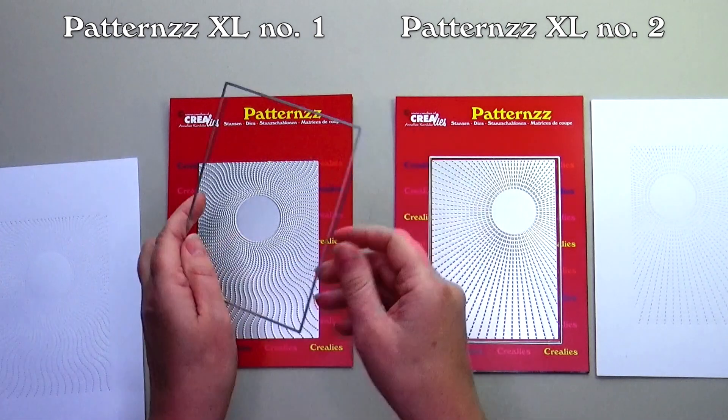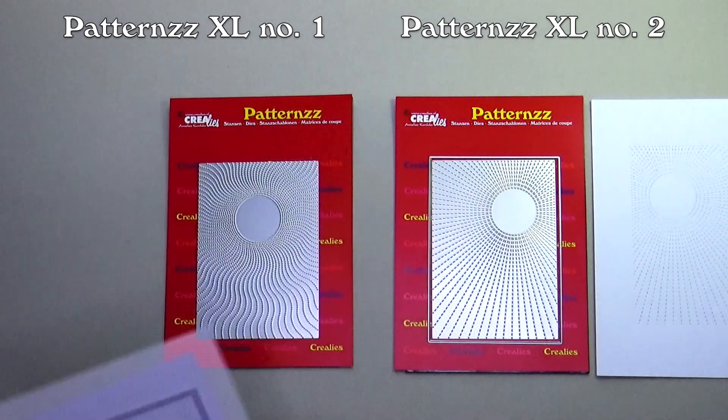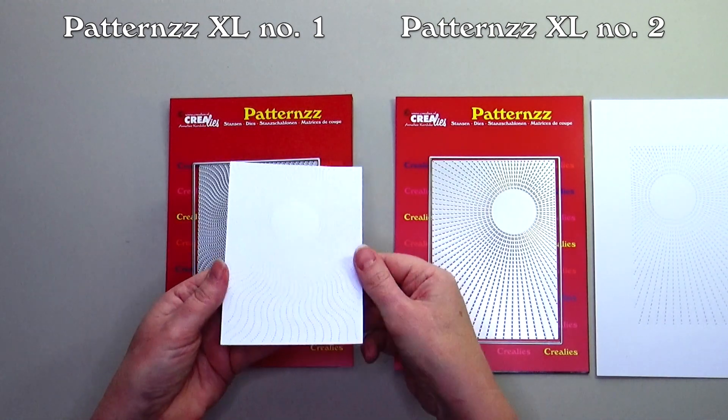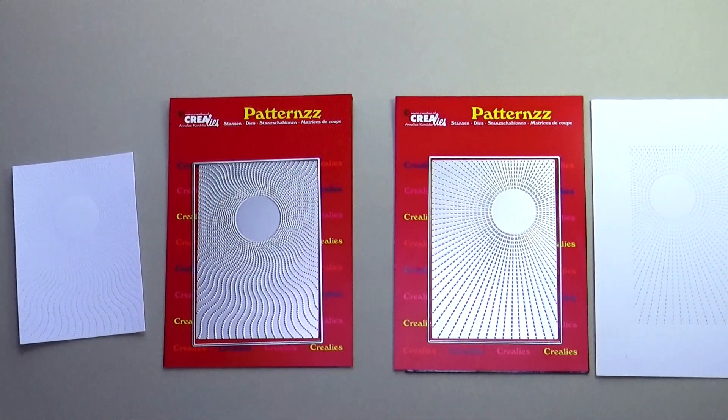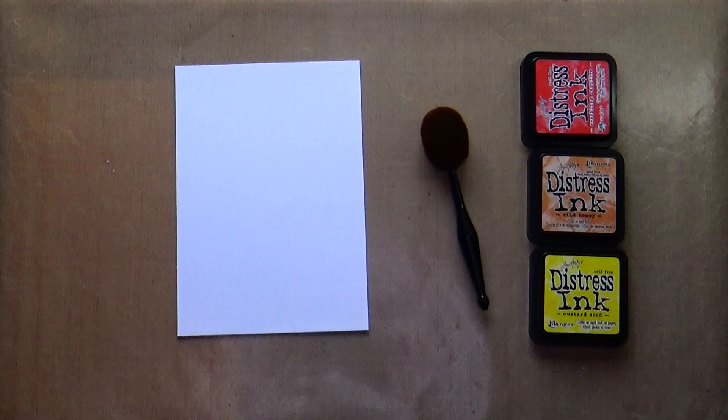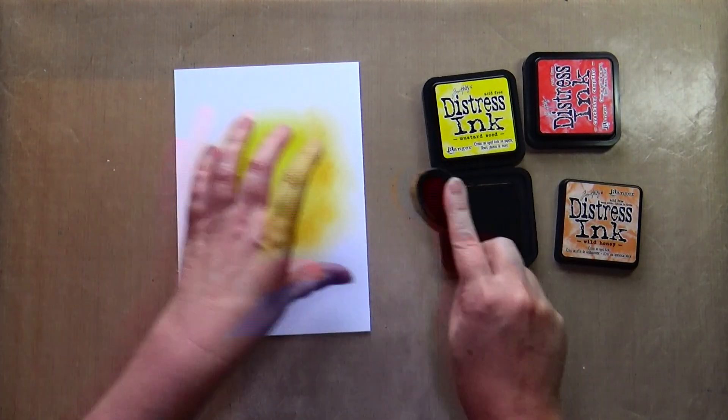The separate outline die allows you to decide whether you want to use the die cut as a layer or have the details in the middle of your creation. These die sets are very versatile and today I will show you a number of possibilities.